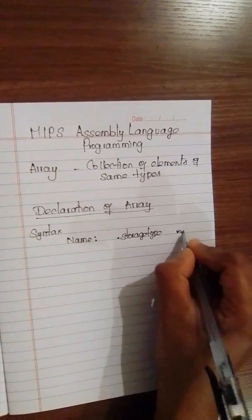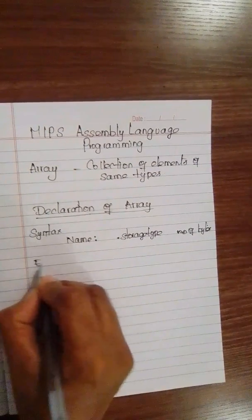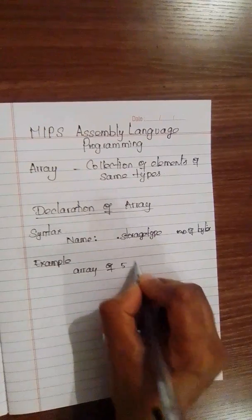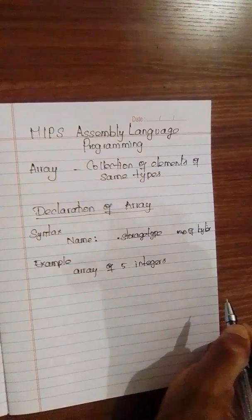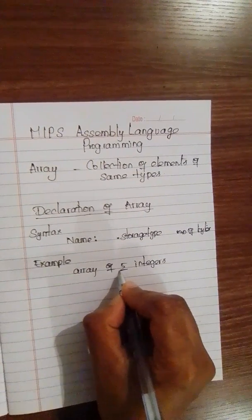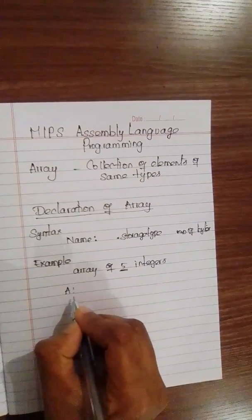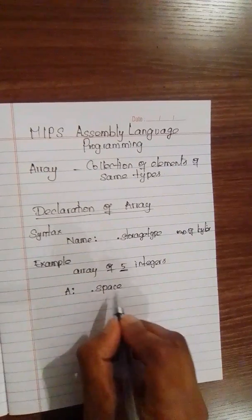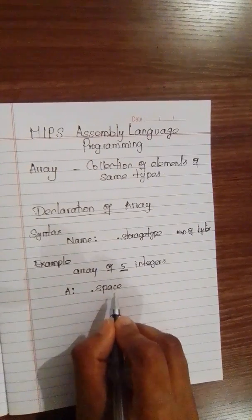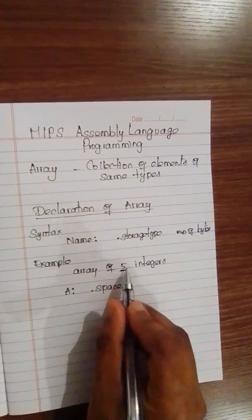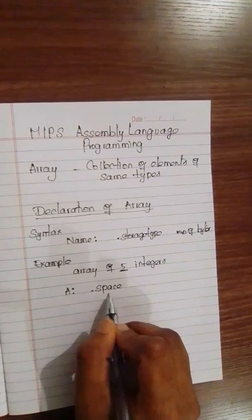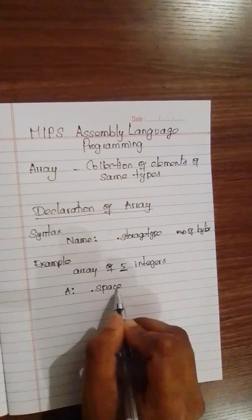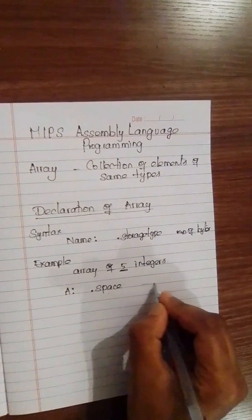Let's see one example. Let's say I would like to declare an array of five integers. Give the name 'a' to the array, followed by a colon, and the storage type here is 'space'. I'm going to allocate memory locations to array 'a'. This space doesn't mention the data type — we are not specifying the type of the elements, we are just allocating storage space for the array.